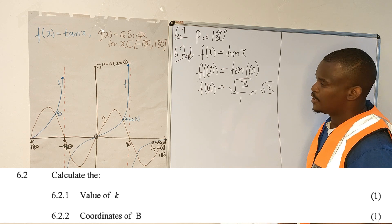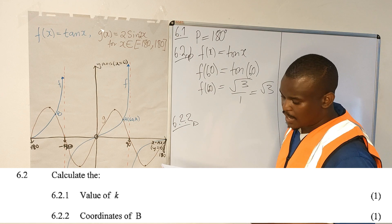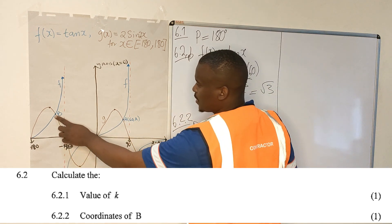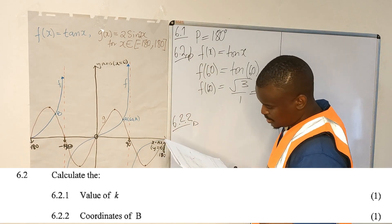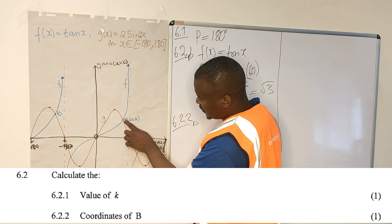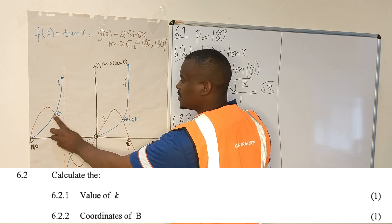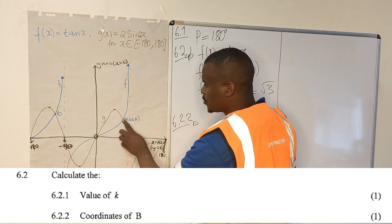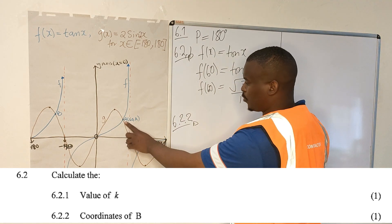6.2.2: Calculate the coordinates of B. Where is B? B is here — it's exactly identical to that point, but this point is one period away. So you said your period is 180. If you move from this point to this point, this point is exactly one period away — 180 degrees away from this point here.